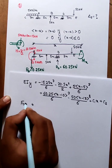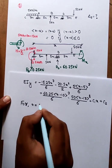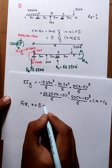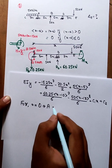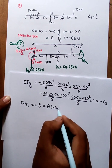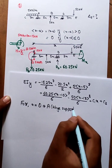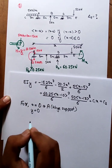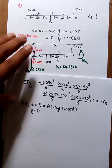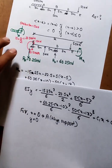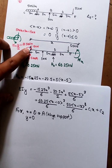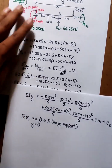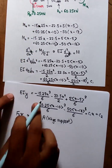For x equals 0, we have a support condition. At this support, y equals 0. What happens at this support is that the particle movement equals y equals 0. At x equals 0, y equals 0 is the boundary condition.